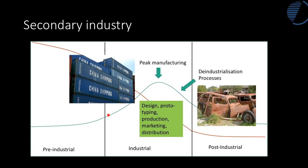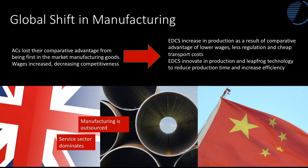By contrast, China in 1990 started to go into the industrial stage. In 1990 it produced less than 3% of global manufacturing output by value; now that's 25%, and China makes an estimated 70% of all mobile phones. Related to the decline in manufacturing in advanced countries is the so-called global shift in manufacturing. As advanced countries lost their competitive advantage — the UK was the first country through the industrial revolution — it became less competitive as wages increased and regulation grew. This led to the global shift, whereby EDCs took over manufacturing, with comparative advantages of lower wages, less regulation, and cheap transport through containerisation.